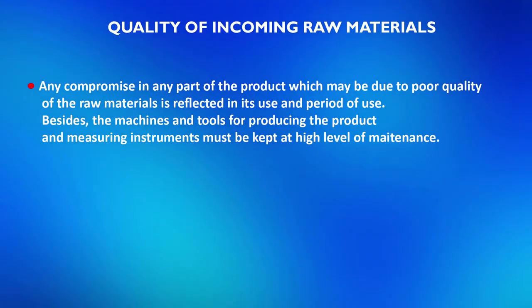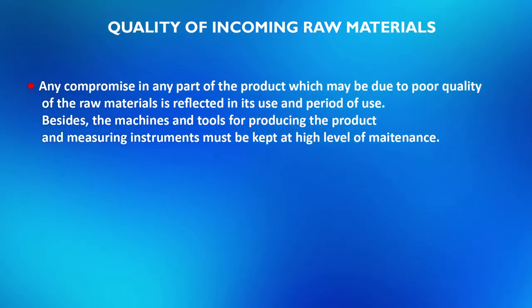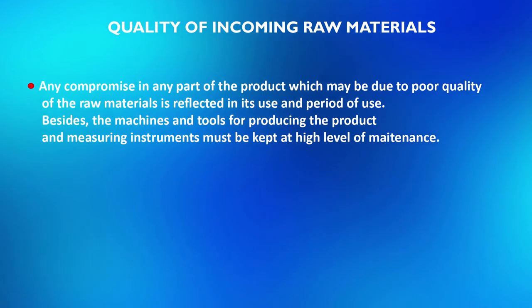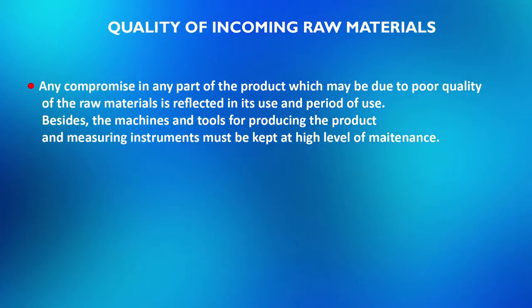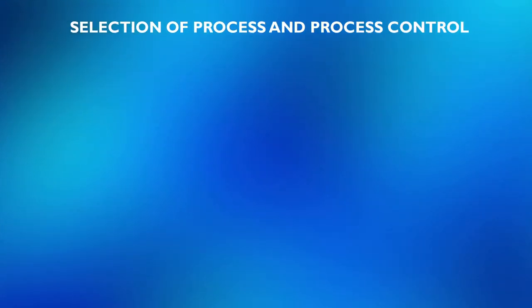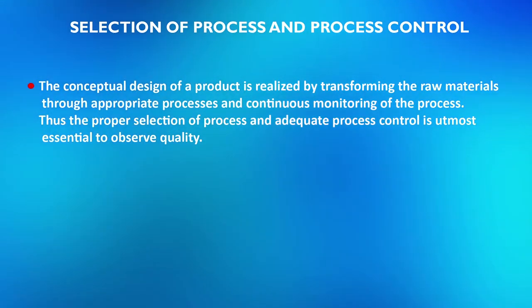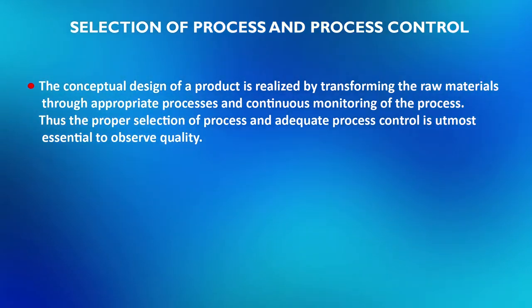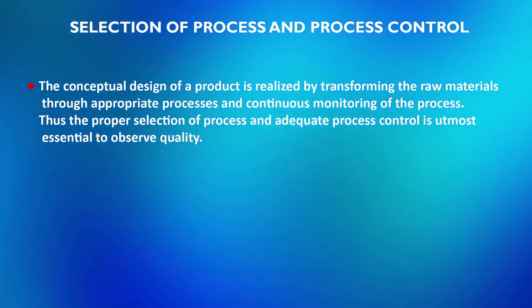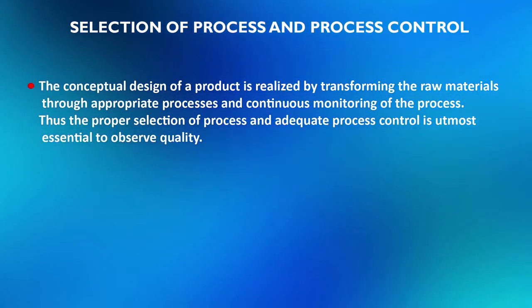Any compromise in any part of the product due to poor quality of raw materials is reflected in its use and period of use. Besides, the machines and tools for producing the product and measuring instruments must be kept at a high level of maintenance. The conceptual design of a product is realized by transforming raw materials through appropriate processes and continuous monitoring. Thus, proper selection of process and adequate process control is of utmost importance to ensure quality.